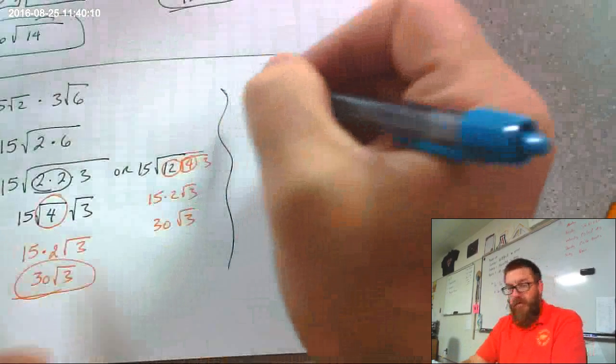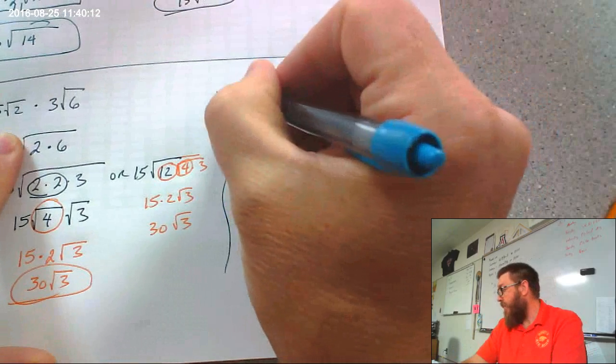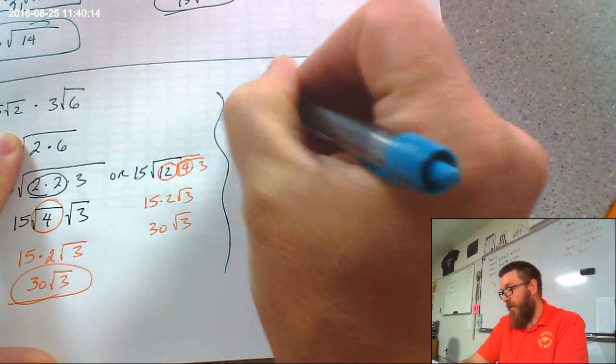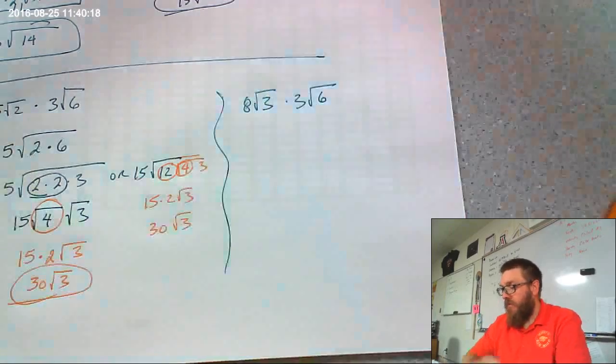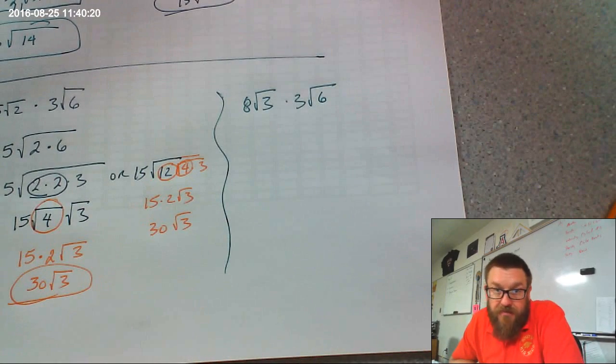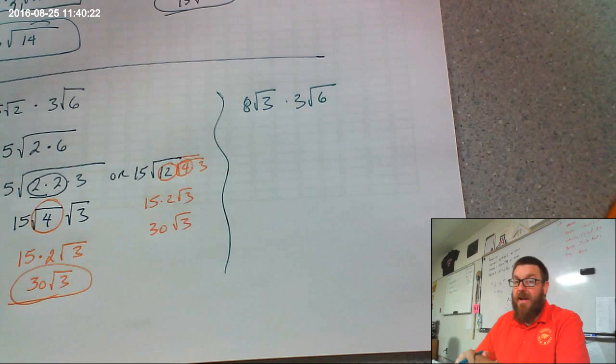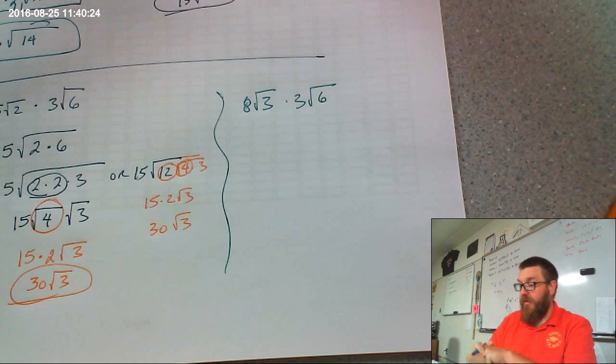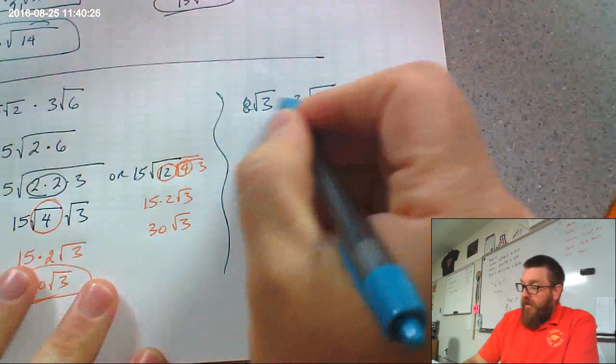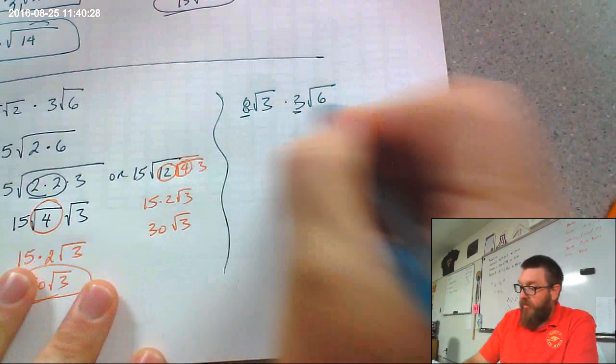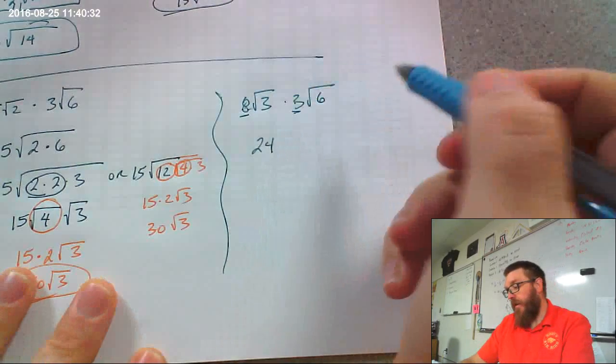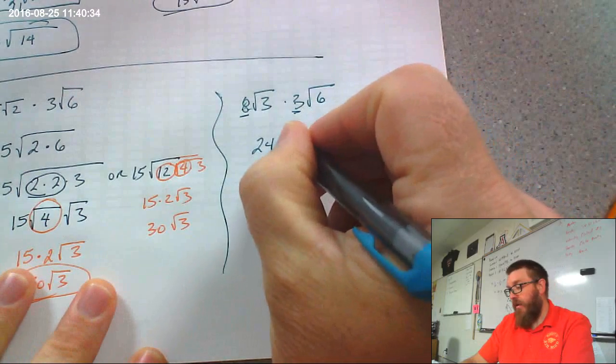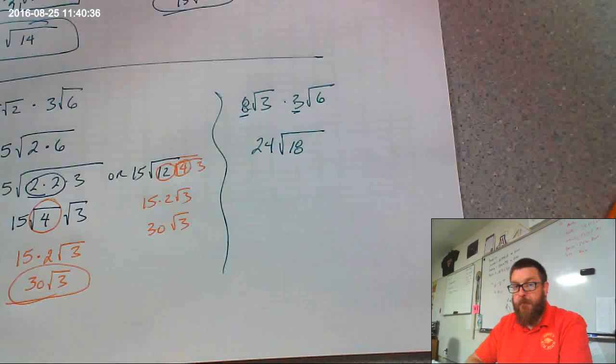Last example. It's going to be similar to this one. So, it would be a good idea, instead of just watching, to try it on your own. And, when you're done, unpause the video and see if you got what I got. So, 8 and 3, this 8 and this 3 make 24. Now, the square root of 3 and the square root of 6, well, that would be the square root of 18, right?